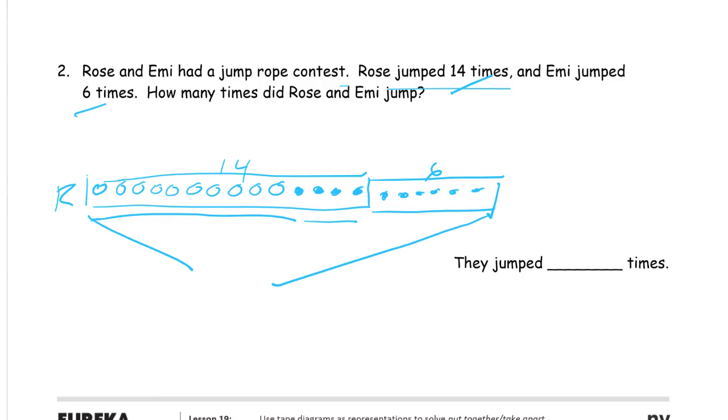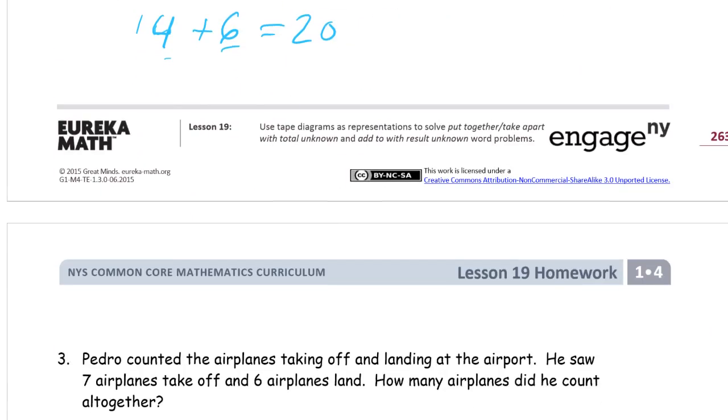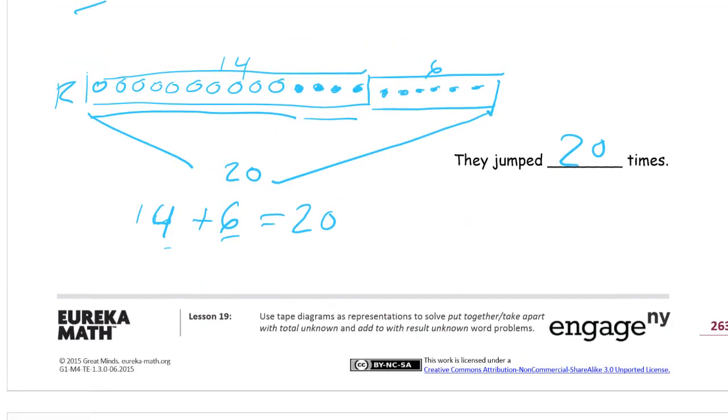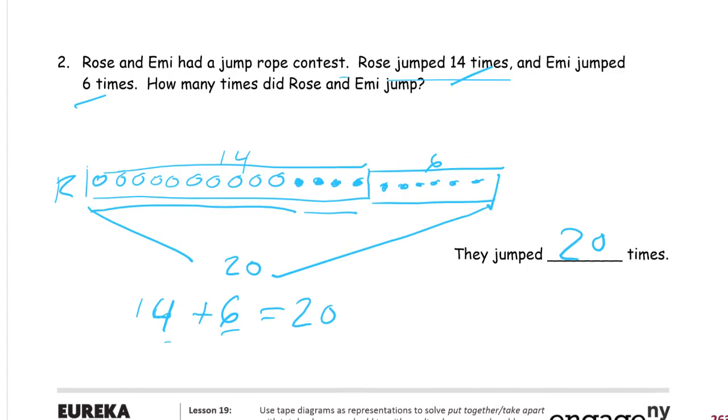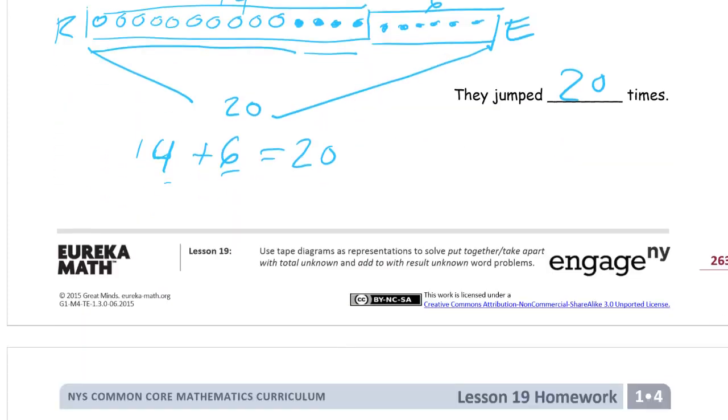14 plus 6 equals, and you may notice that 4 and that 6 make 10, so you're really just adding two 10's together. They jump 20 times. And that's what a tape diagram is supposed to look like. I left out Emmy. Label Emmy's jumps, E.